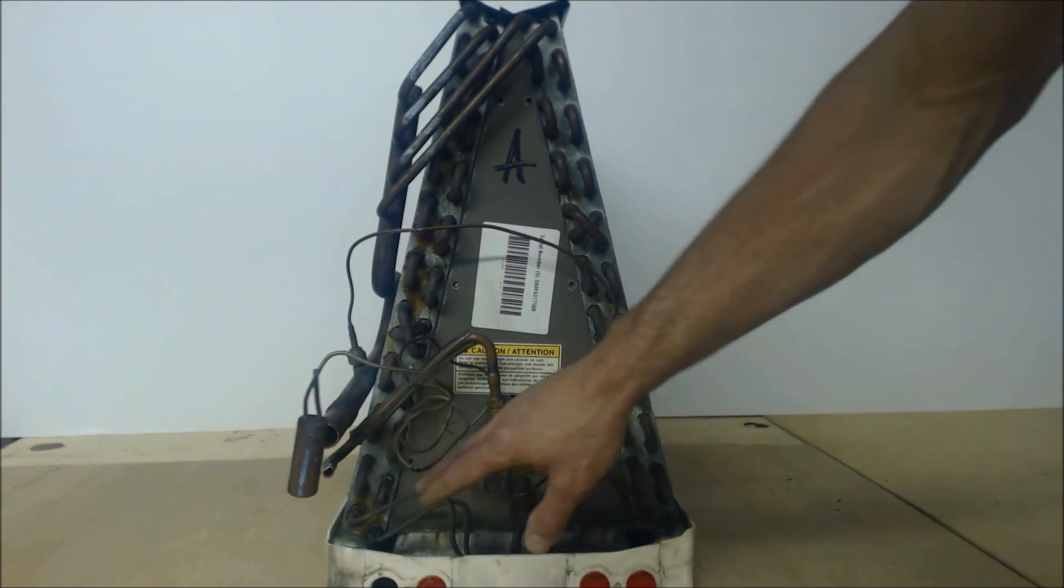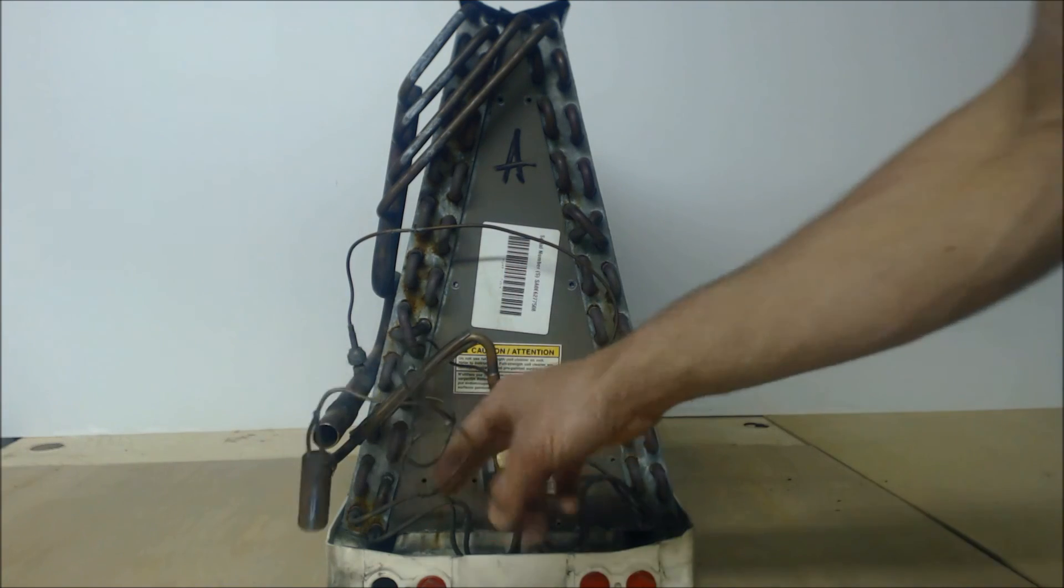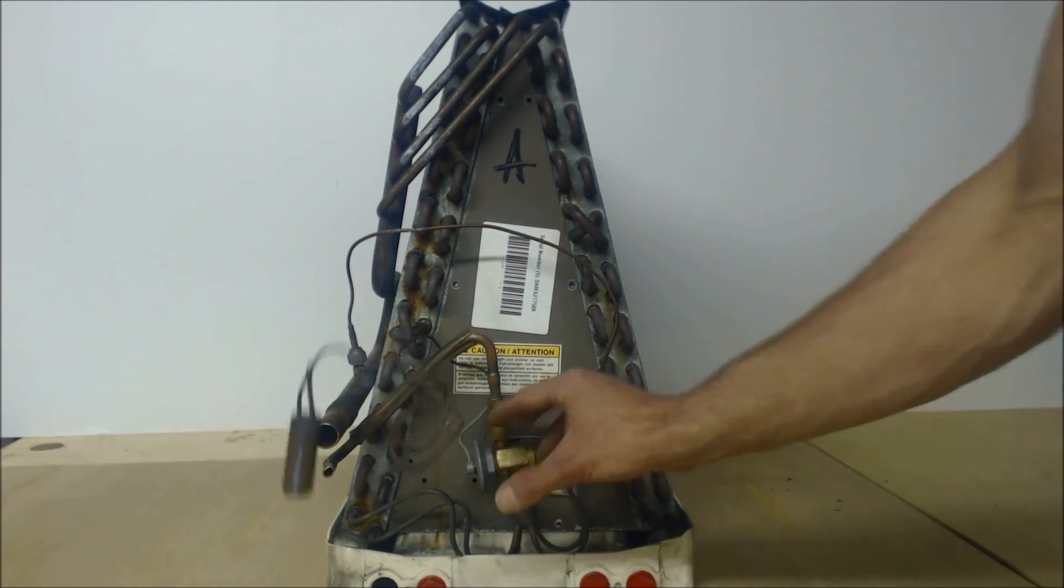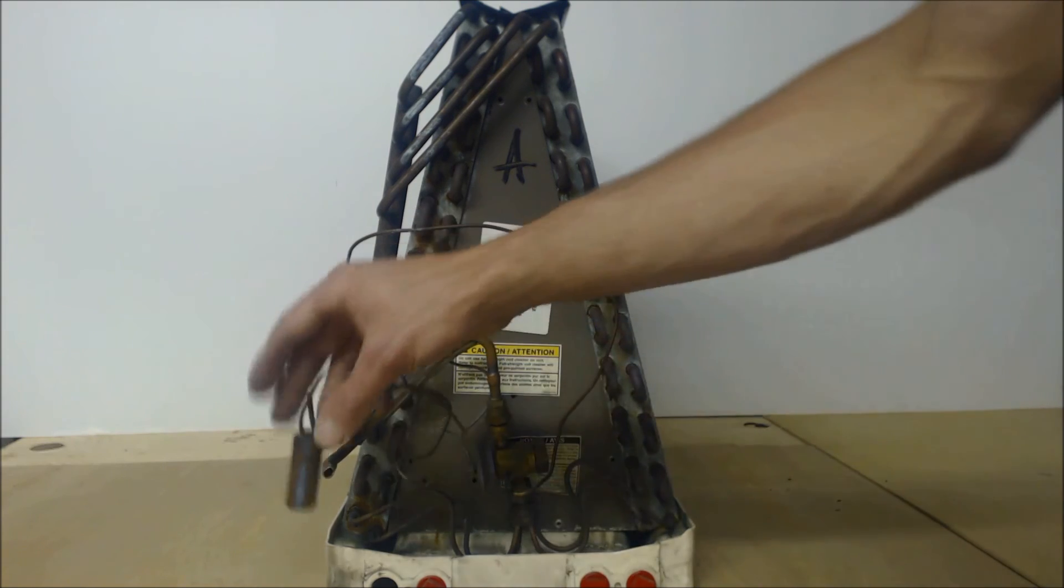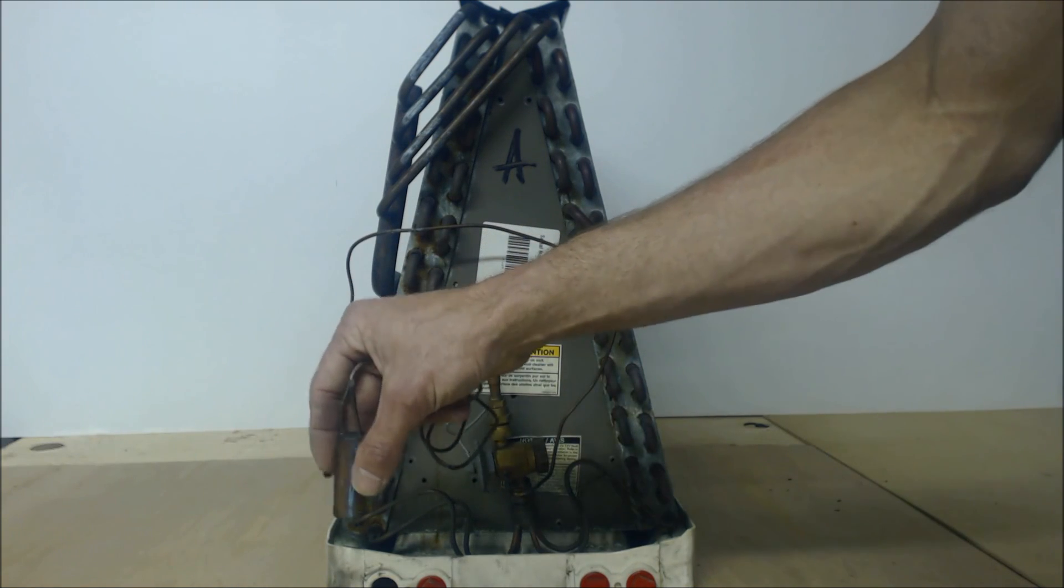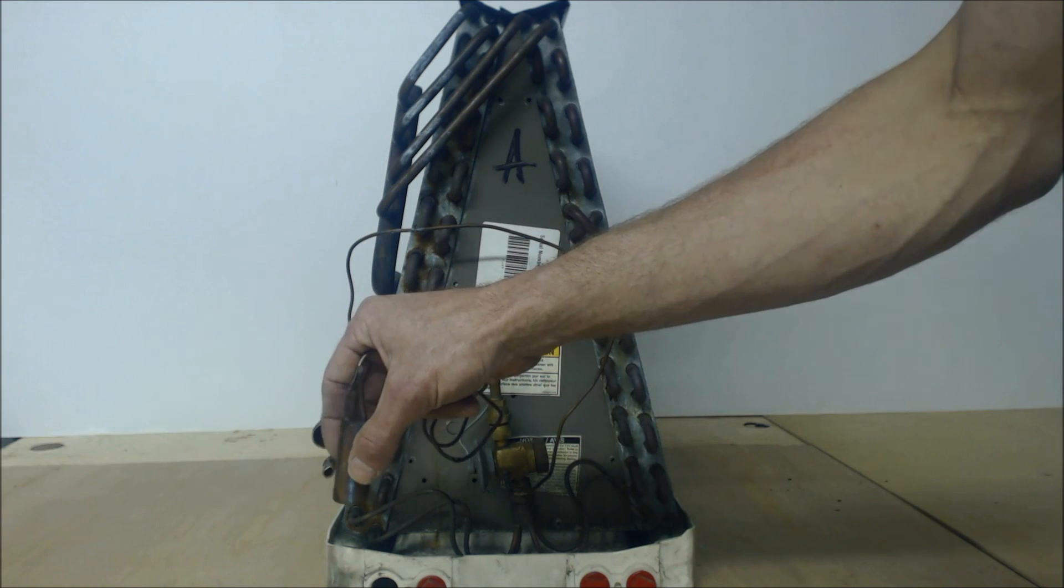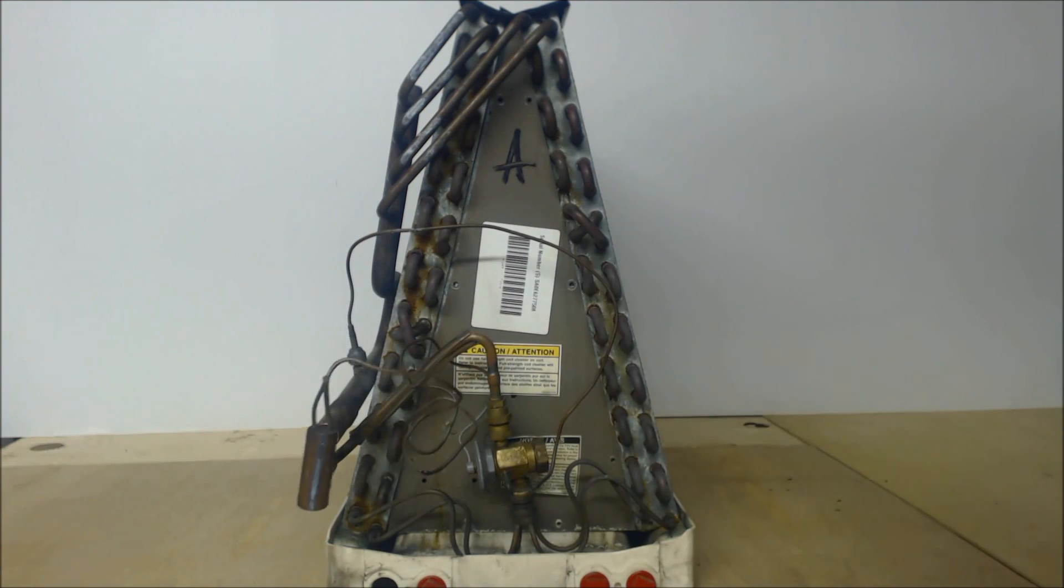If this runs out of refrigerant, then there will be no more pressure to apply to the TXV in order to open. So if you see a suction pressure that's down lower, that's because there was no opening pressure due to the refrigerant loss in the TXV bulb.